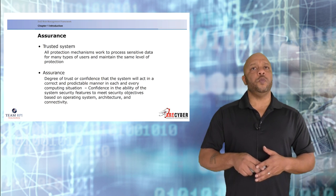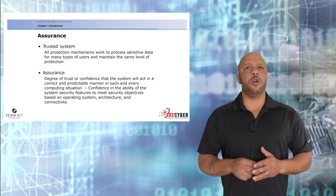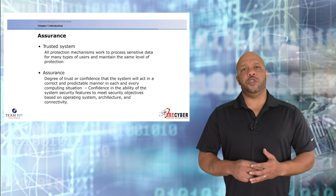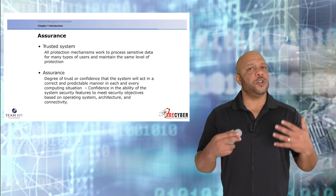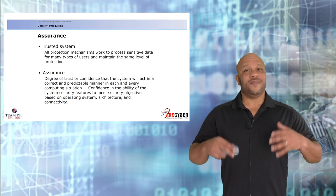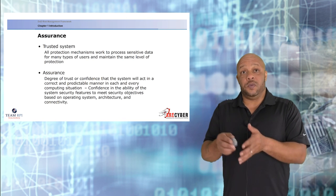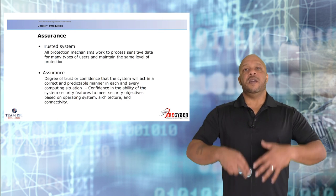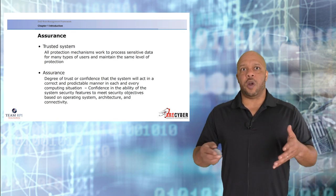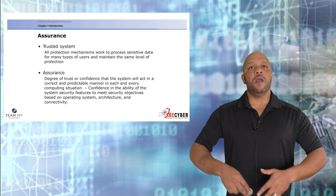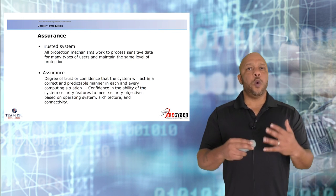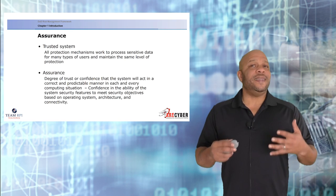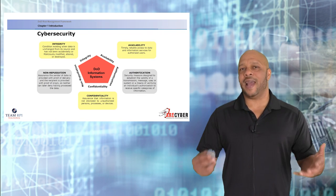Before we can start, we need to understand some core terms, starting with assurance. When we talk about assurance, we're dealing with a degree of trust or confidence that the system is going to act and behave in a manner that is predictable. We need to be able to trust our systems. All protection mechanisms work to process sensitive data for many types of users and maintain the same level of protection.